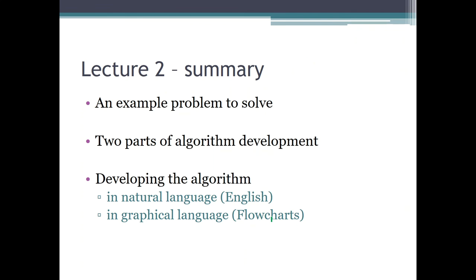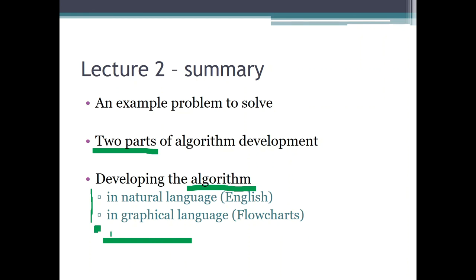So in this lecture, what have we done and learned? We saw the example problem to solve, then the two parts of algorithm development. Remember: the first part — thinking the algorithm in your head — is the hard part, and the second part — writing it down — is just a piece of cake. We then developed our first algorithm for the interesting problem of boiling water for tea, and we saw both forms of writing it down: in natural language and in a graphical language. We haven't yet seen the third form — the programming language — which we will inspect in much greater detail in the following lectures.